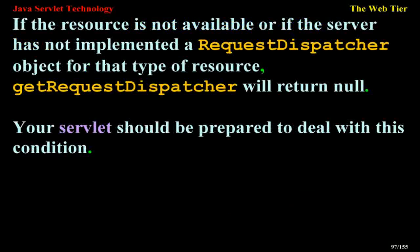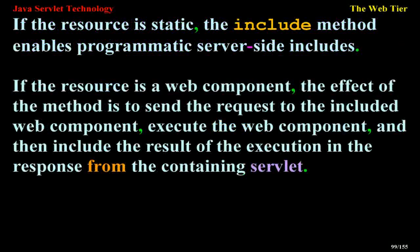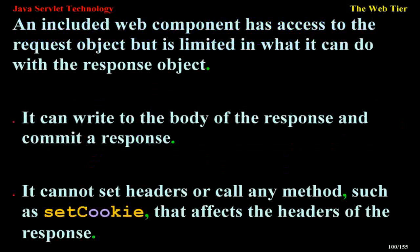Including other resources in the response: it is often useful to include another web resource, such as banner content or copyright information, in the response returned from a web component. To include another resource, invoke the include method of a RequestDispatcher object: include(request, response). If the resource is static, the include method enables programmatic server-side includes. If the resource is a web component, the effect of the method is to send the request to the included web component, execute the web component, and then include the result of the execution in the response from the containing servlet. An included web component has access to the request object but is limited in what it can do with the response object — it can write to the body of the response, but it cannot set headers or call any method, such as setCookie, that affects the headers of the response.